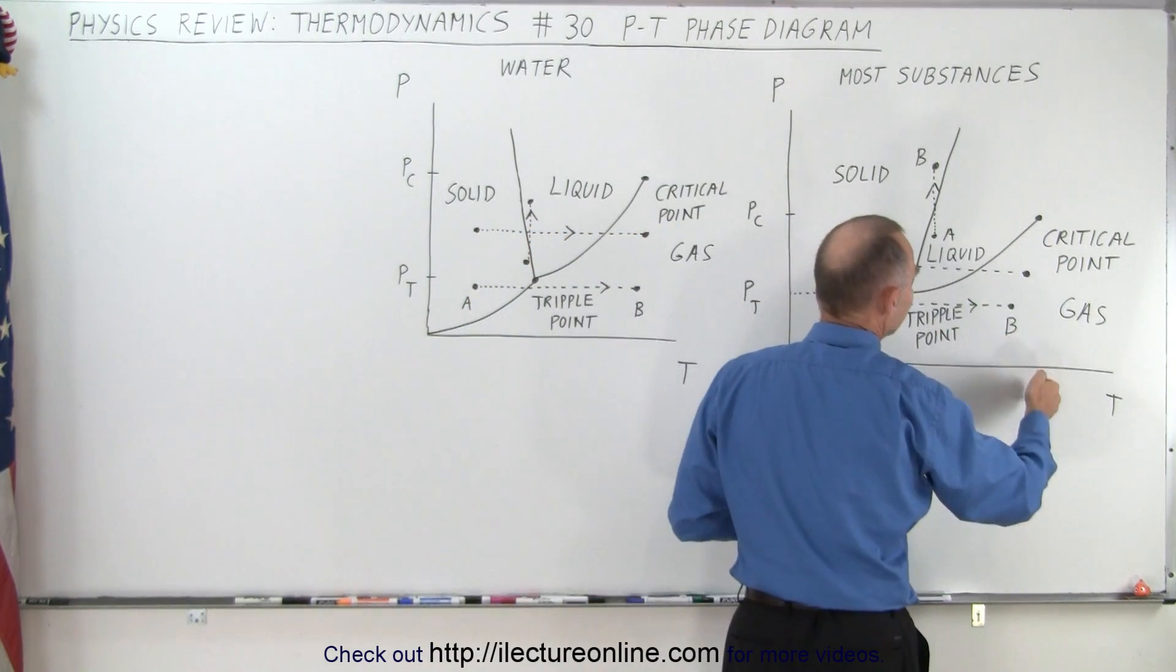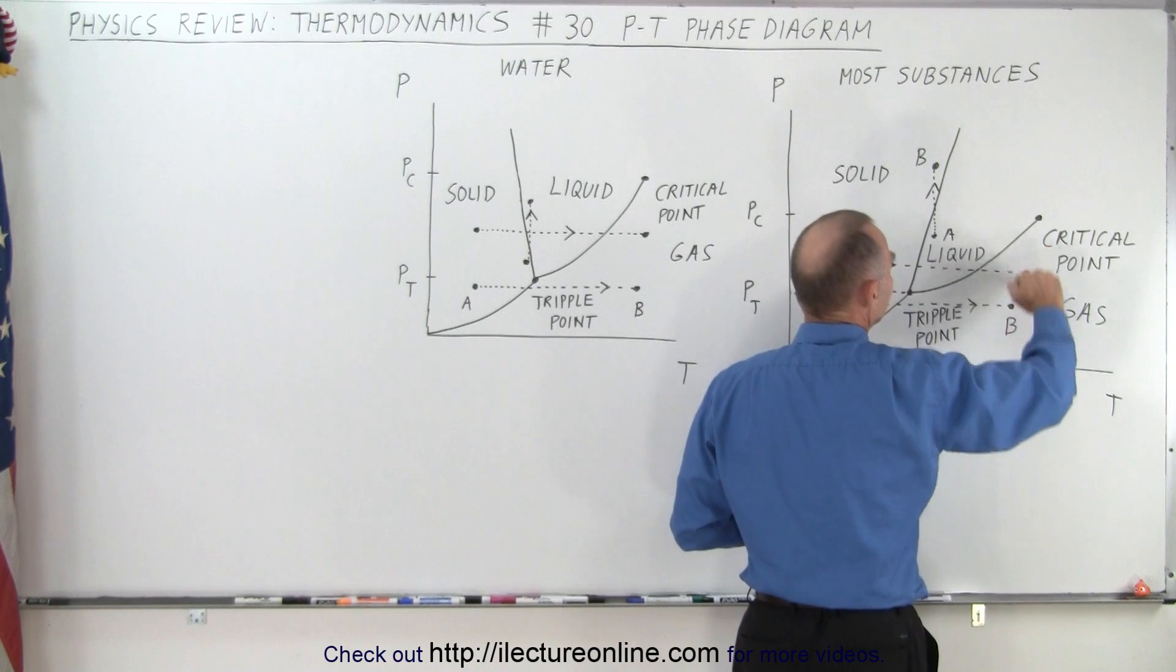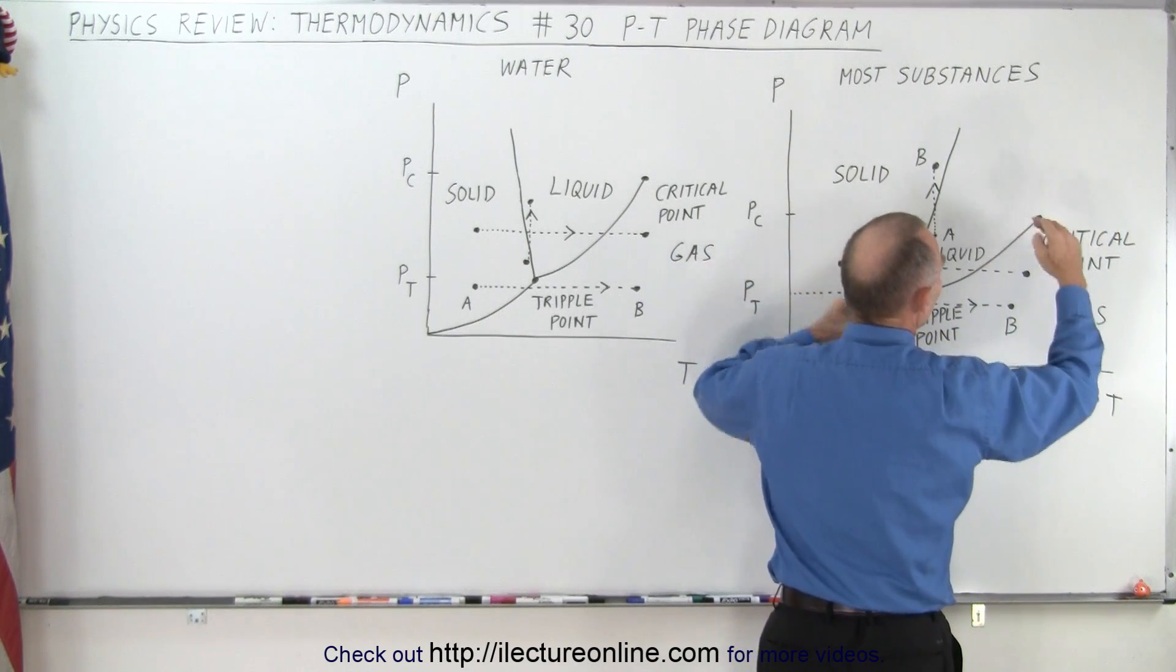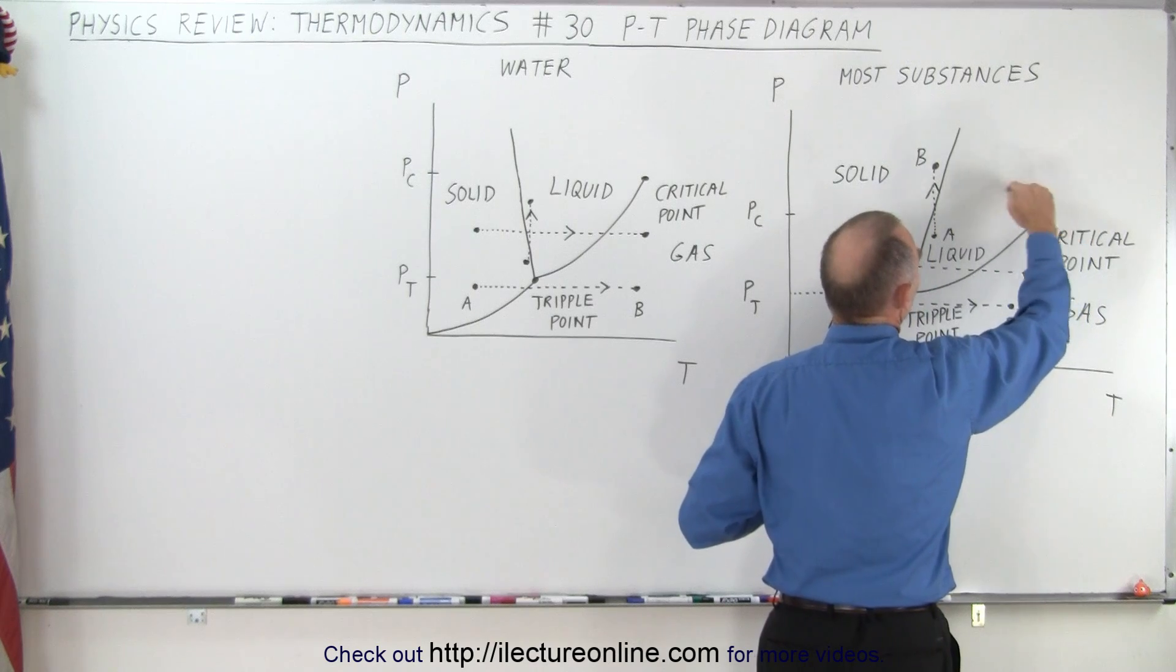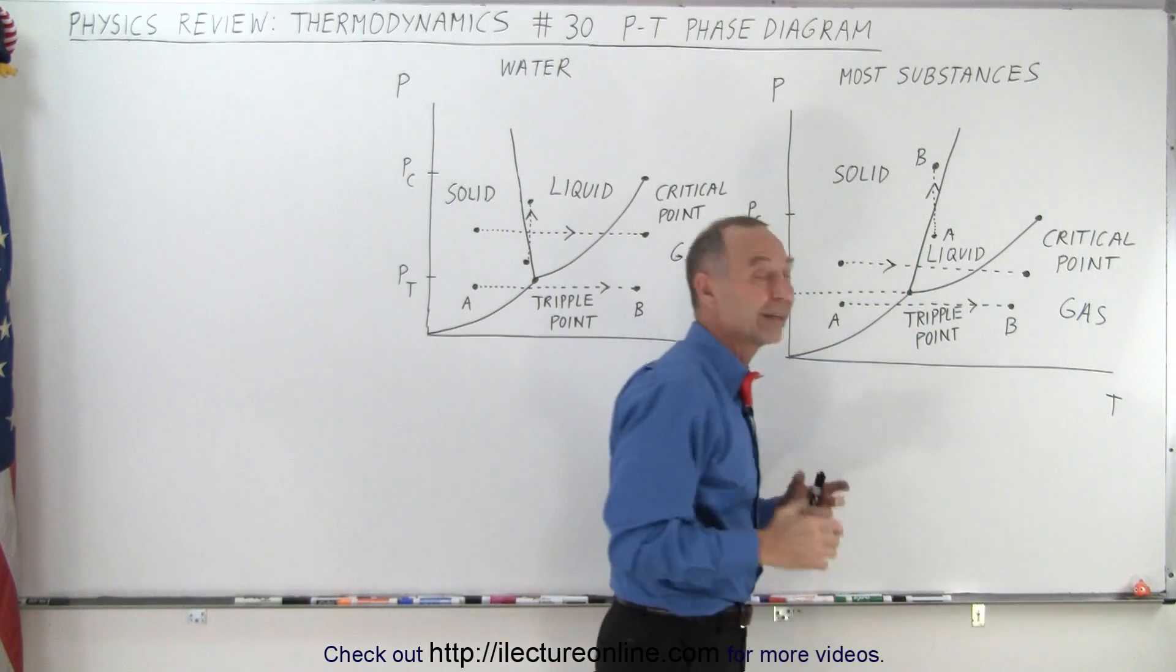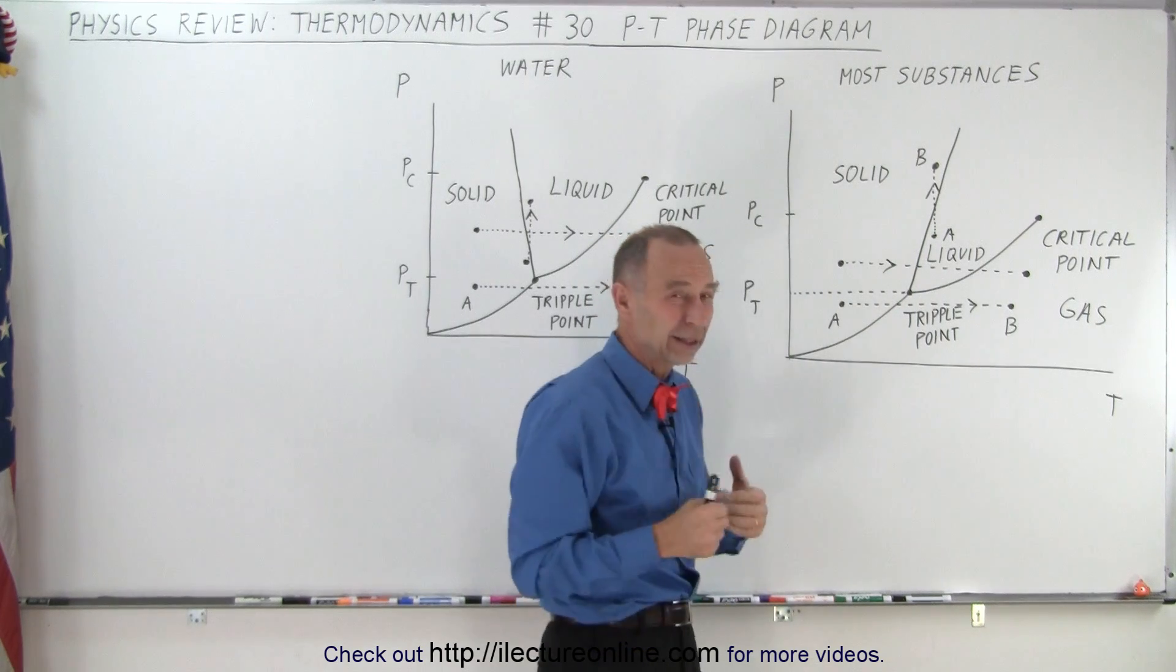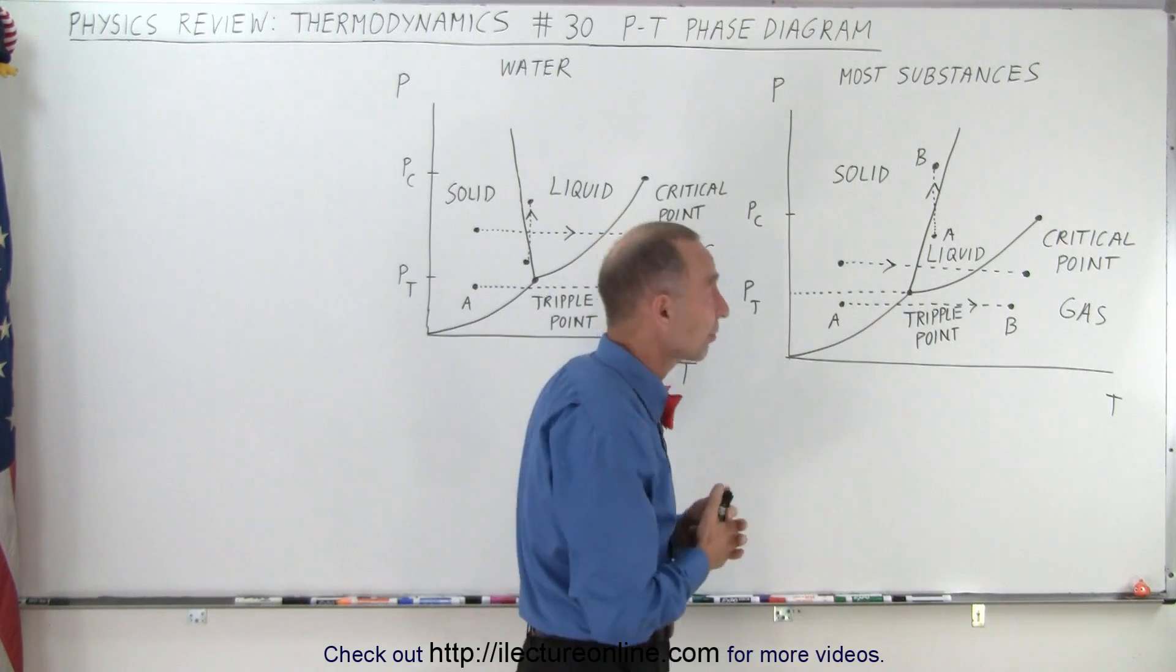The critical point is such that at a particular temperature and at a particular pressure, the gas has been compressed sufficiently so that there's no longer much of a difference between a gas and a liquid. It's hard to tell the difference. It's almost like the way the atmosphere is on Venus, for example.